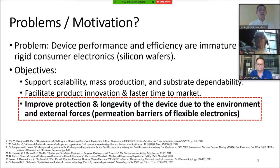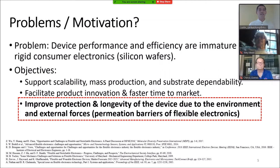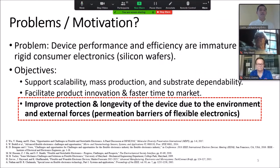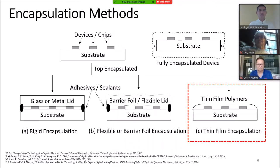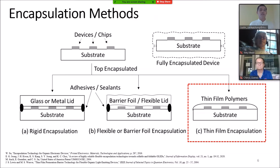For this work in particular, I'm trying to improve the protection and longevity of flexible electronics by creating an encapsulation layer. There are three main ways to do encapsulation. The first is through rigid encapsulation using a glass or metal lid. The second is through flexible or barrier foil encapsulation using very thin metals or thin glass. Both use adhesives or sealant to create hermetic packaging. For this thesis, I'll be focusing on the third method: thin film polymers, using thin films to create hermetic packaging for flexible electronics.